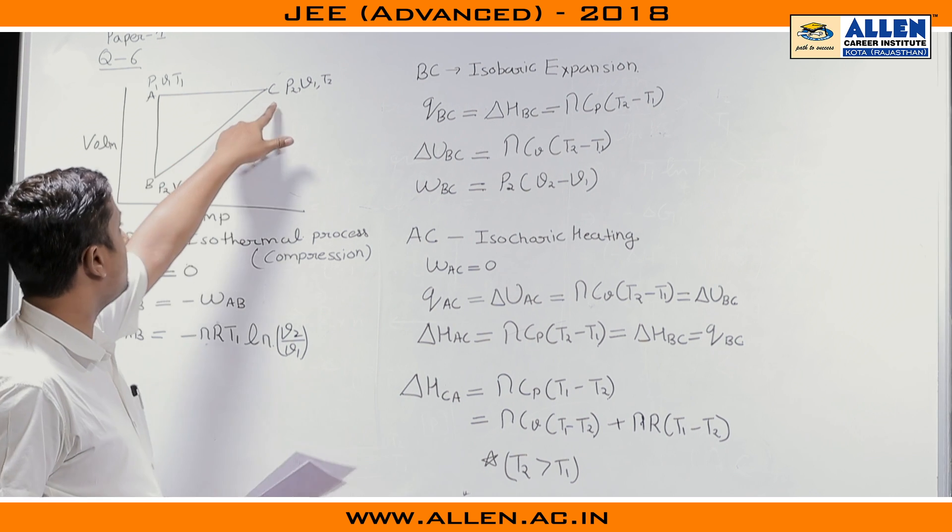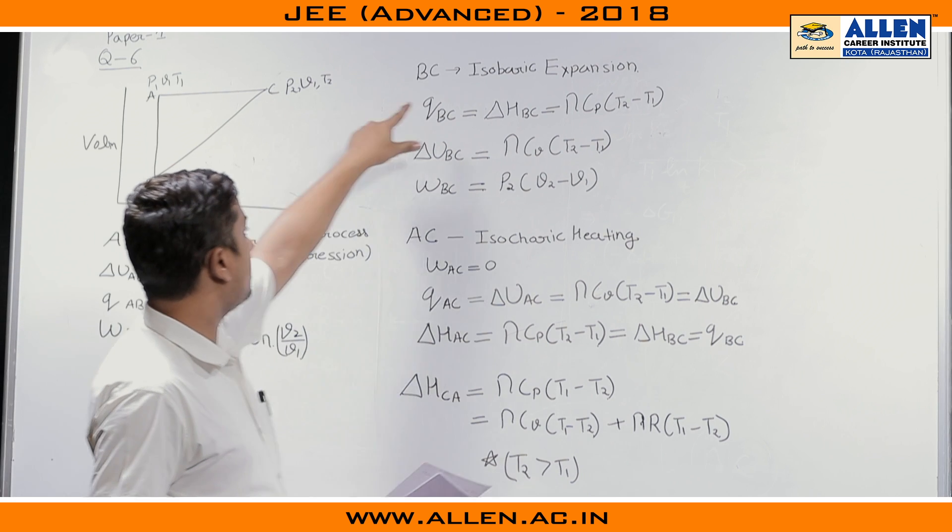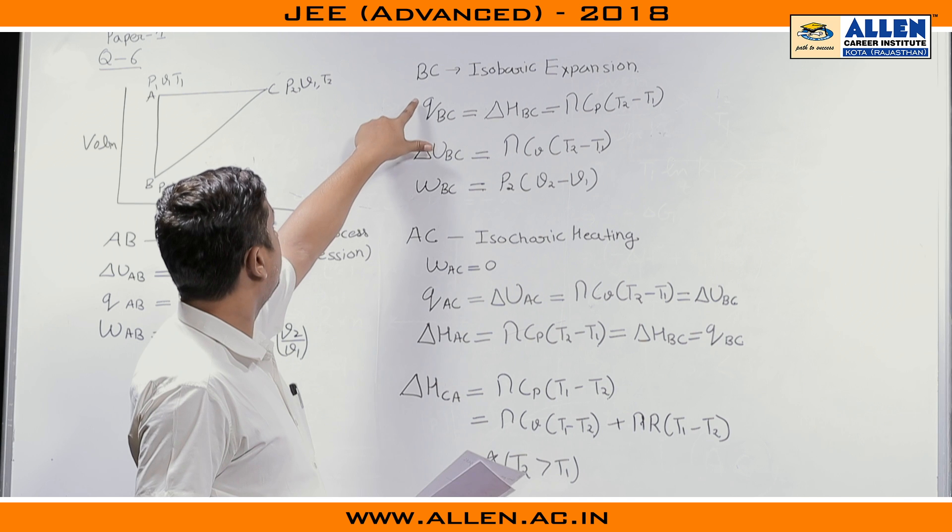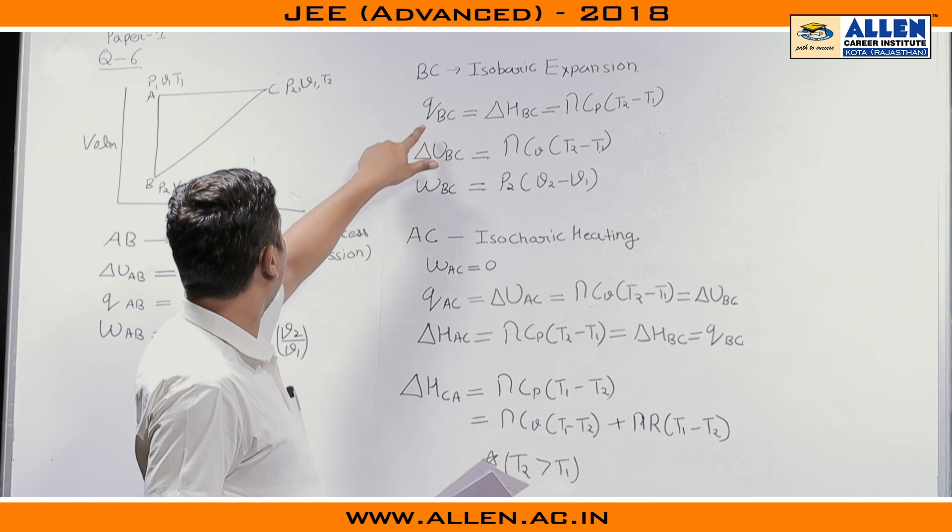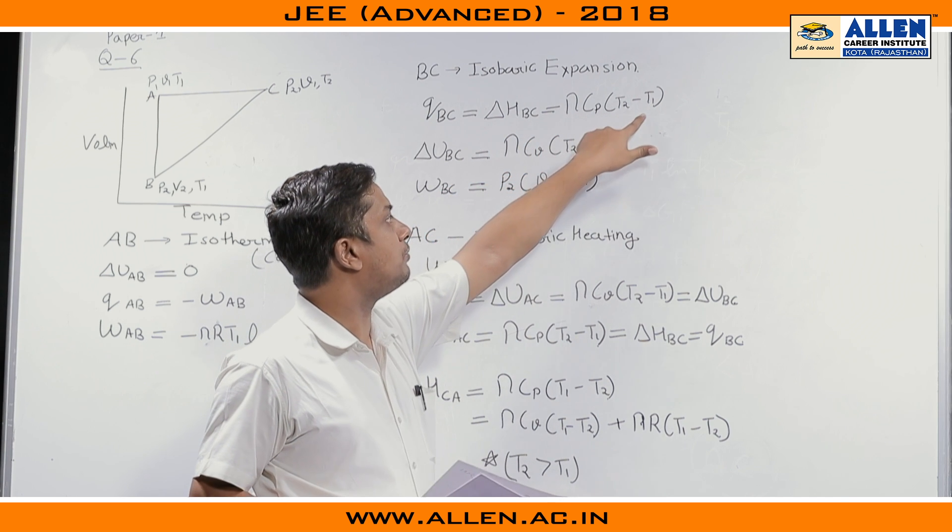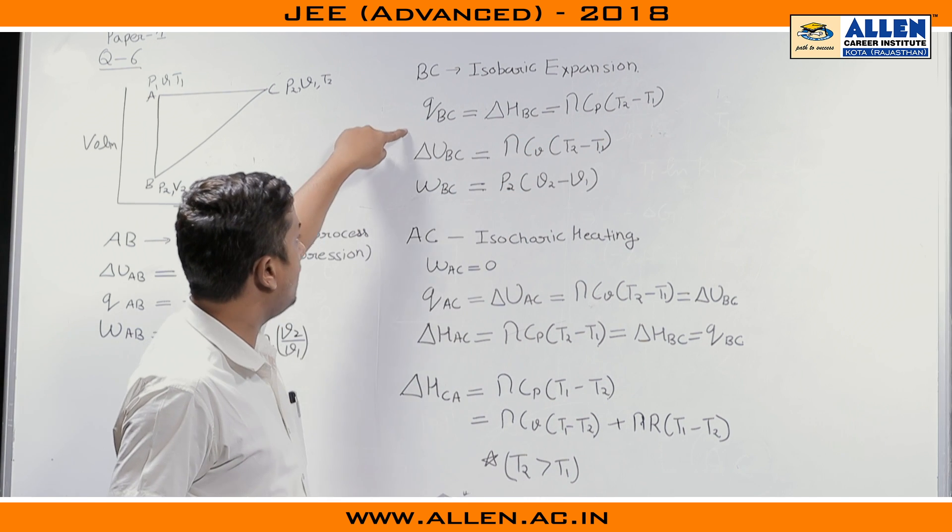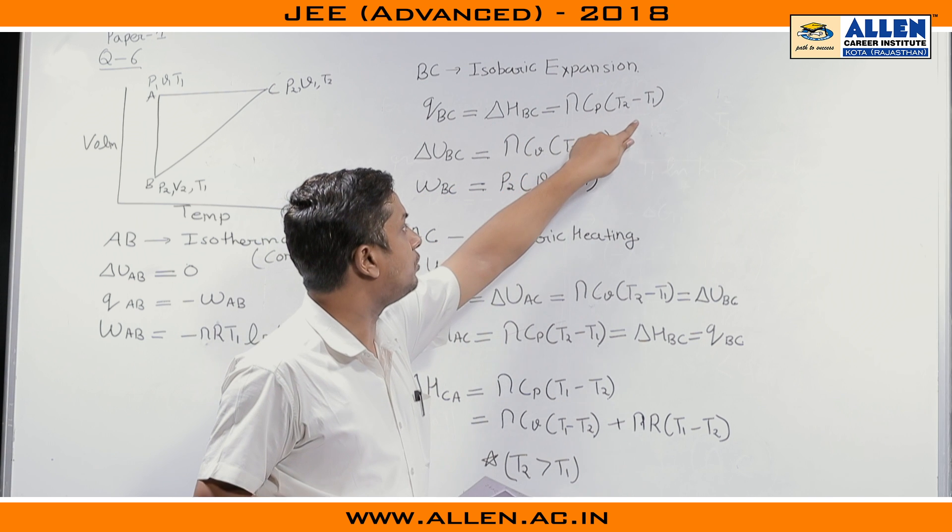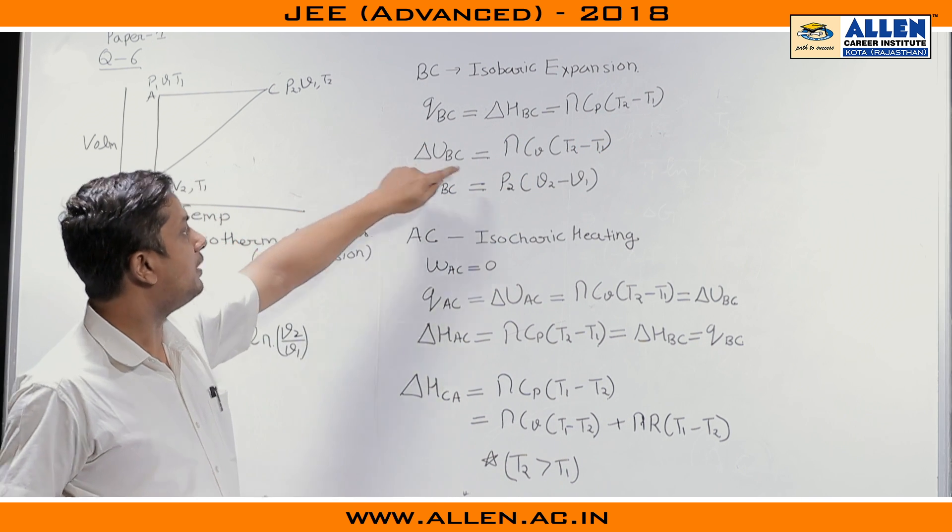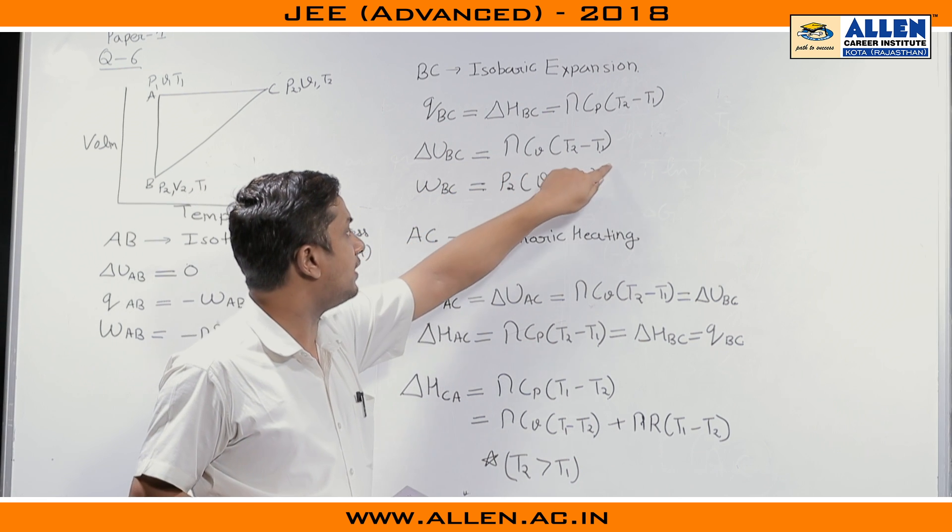Now, the second process BC process, BC process is isobaric expansion. So, isobaric expansion means my Q_BC will be equal to delta H_BC equals to nC_P(T₂ minus T₁).